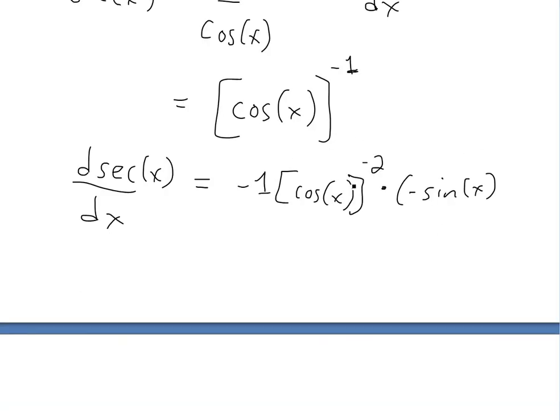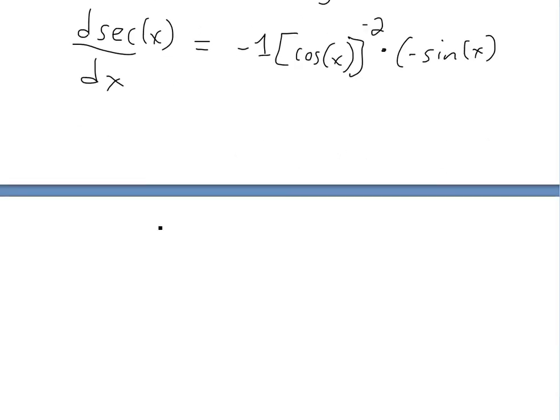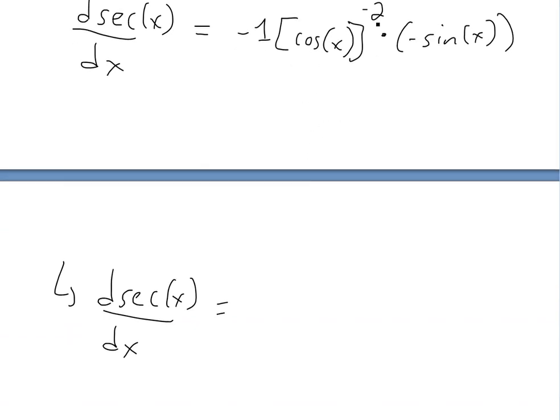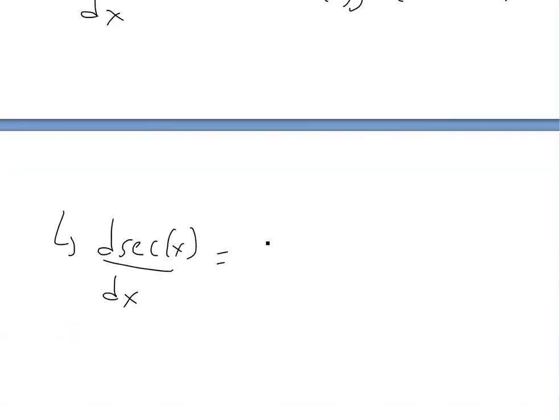So now let's write this as a fraction. We could put this at the bottom, so we could write it as d sec(x) over dx equals, the negatives are going to cancel. There's a negative 1 times negative sine, so they cancel, so we don't have any negative numbers. We're going to have 1 over cos squared x times sine of x.